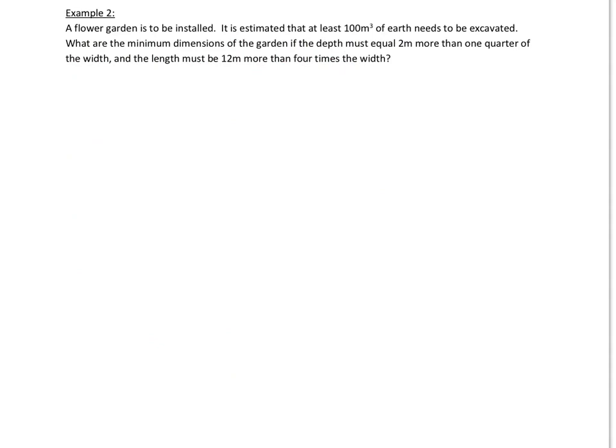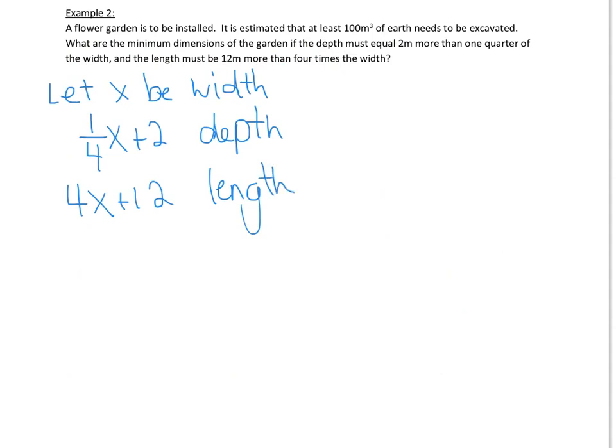So we're just testing your algebra skills here a little bit. Hopefully, you can see that the width is actually the smallest, so I always like to start there. And how about we let X be the width? Okay? So then we have our depth or our height, which we know is 2 more than 1 quarter. So 1 quarter of the width plus 2 is our depth or our height. And 12 more than 4 times the width, so we have our 4X plus 12 is going to be our length. Okay? And we need at least 100 meters cubed of earth, so that means that we need that volume, of course, to be greater than or equal to 100.